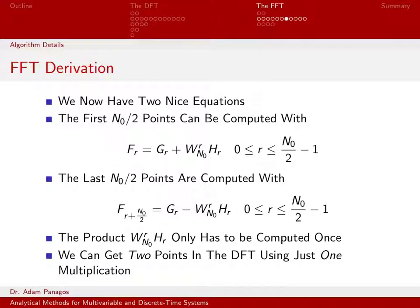So now we have two nice equations. Equation 1: f_r equals g_r plus w_{n_0}^r times h_r. And the equation we just developed for f_{r + n_0/2}. They look very similar — there's a g_r, an h_r, and the same coefficient w_{n_0}^r. The only difference is that there's a minus sign.